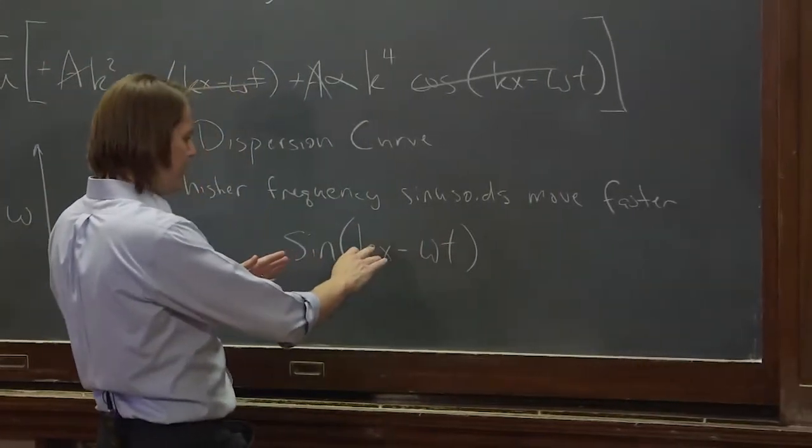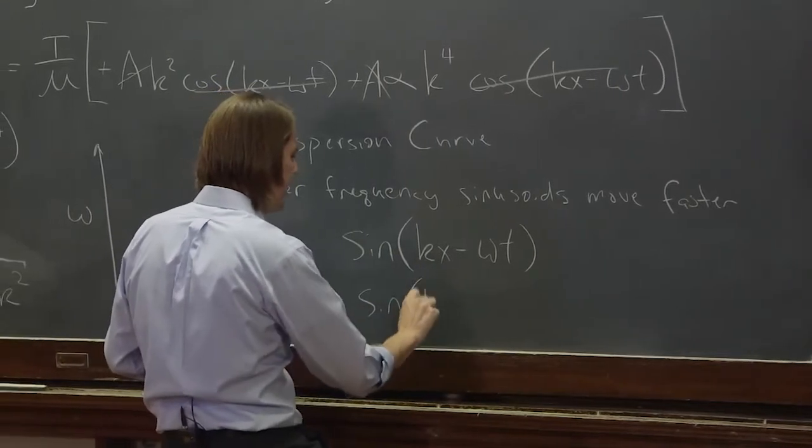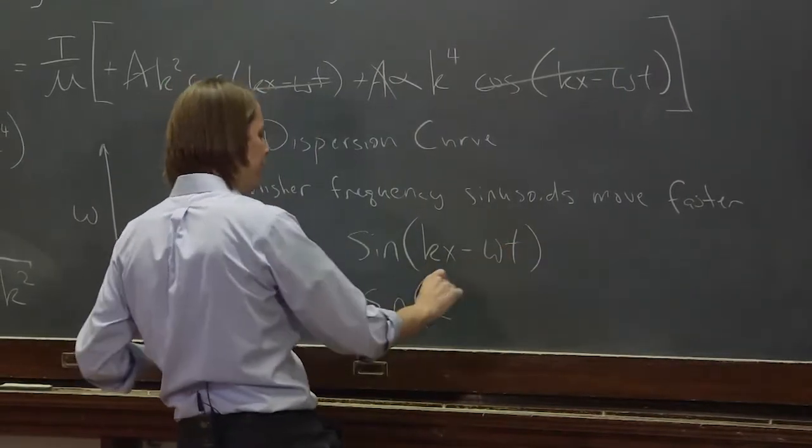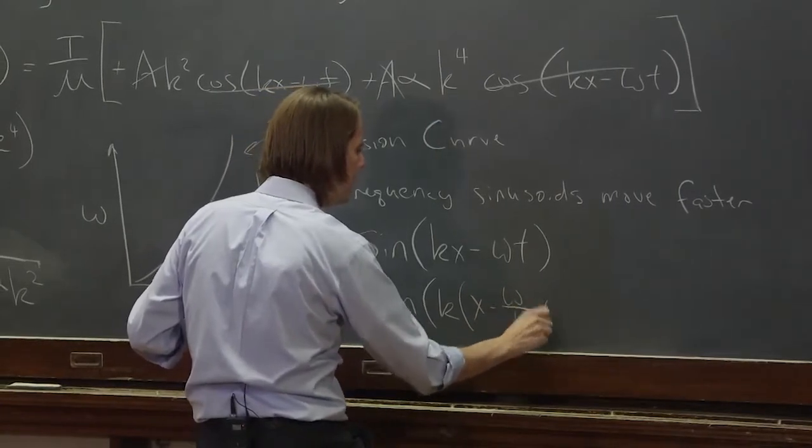Well, one thing to remember is this: if we wanted to write this differently, it would be the sine of k. If we pull the k out, it's x minus ω over k times t.